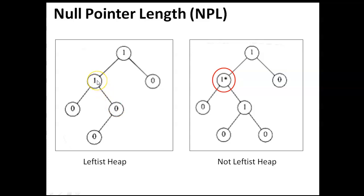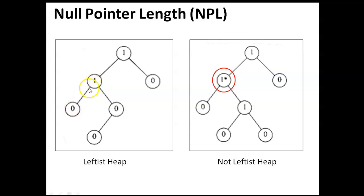This node has the NPL value 1. Why? There are two ways to reach a leaf node from this node — this is one way and this is another way. We have to take the shortest path from that node to the leaf nodes. So the length is 1, and its NPL value is 1.